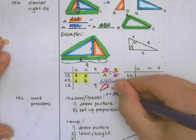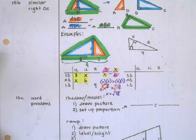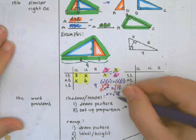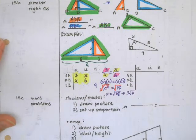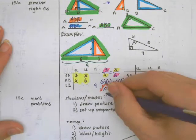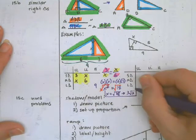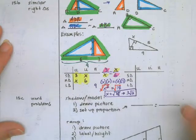So X equals the square root of 18. The square root of 18 can be represented as 3 square root 2. So that would be our final answer.